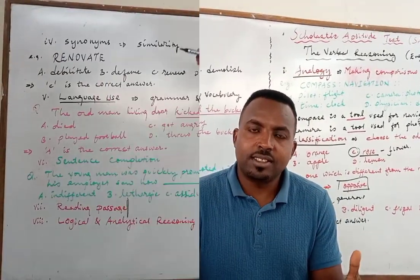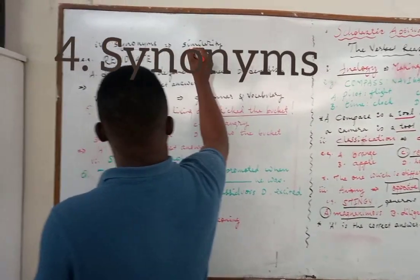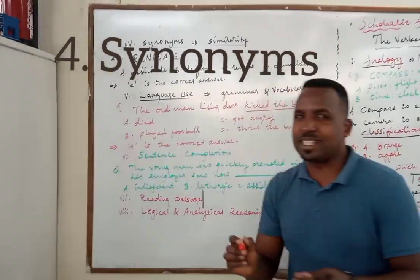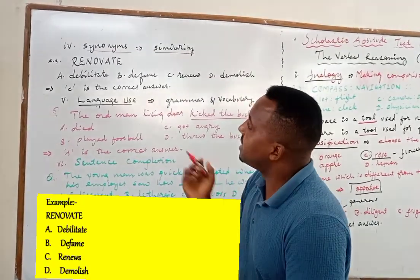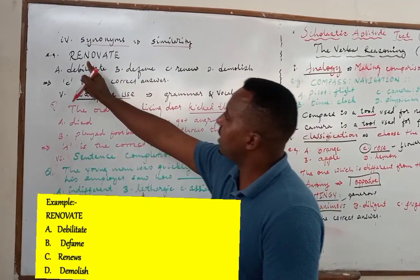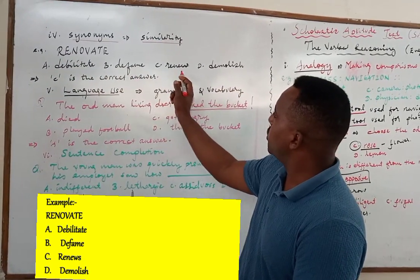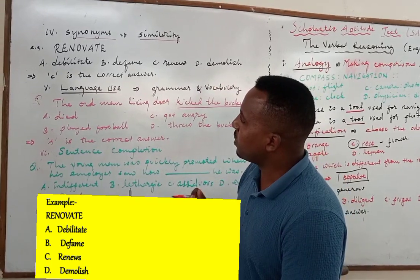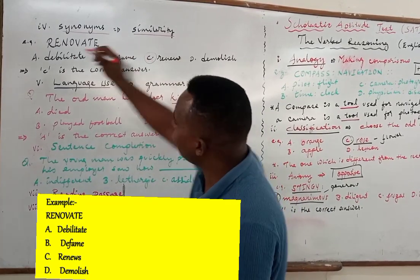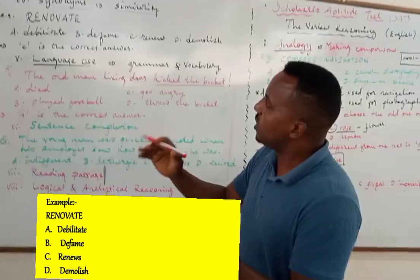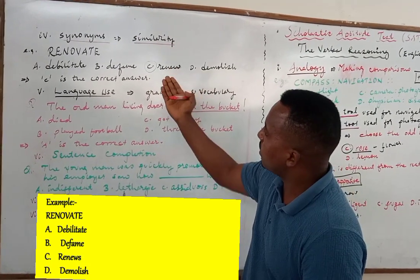The next section is synonyms. Synonyms are words with similar meanings. The word is given in block letters — it's RENOVATE. The options are: debilitate, defend, renew, and demolish. The one which has the same meaning as renovate is renew. Renovate means the same as renew — they are synonyms. Synonyms can be quite elementary when it comes to vocabulary terms.